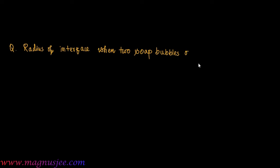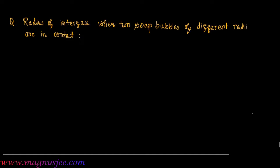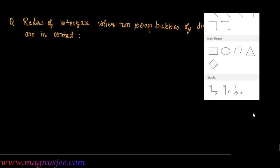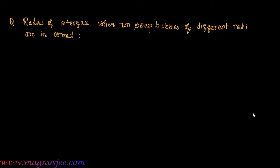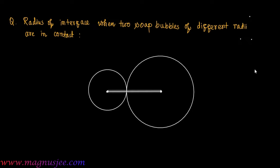We have to find the expression for the radius of the interface when two soap bubbles of different radii are in contact. These are two soap bubbles having different radii which are in contact.